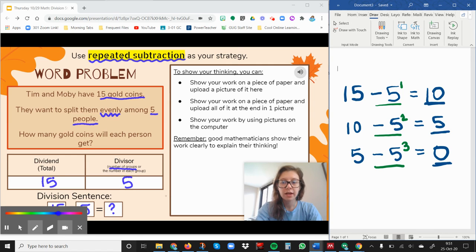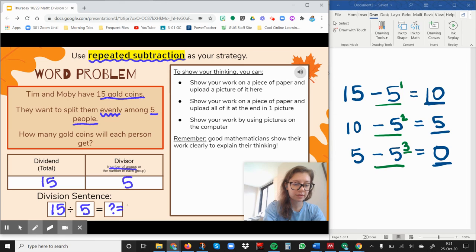So I know that I have 3 in each group because each time we took away 5, we gave 1 to each person. And if we did that 3 times, then everyone would have 3. So our answer is equal to 3 gold coins for each person.